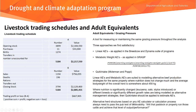Alternative herd structures based on any adult equivalent calculator always need to pass a pub test of believability. When you have different herd models on the same property, you must ask: will that paddock or property run those cattle and achieve that level of output performance? You rely on an experienced manager to say, if I make this change in age of turn-off or nutrition, is it believable that I can get that performance out of those cattle on that pasture?